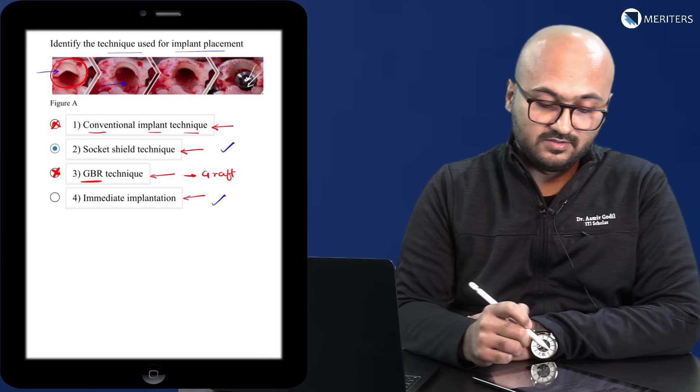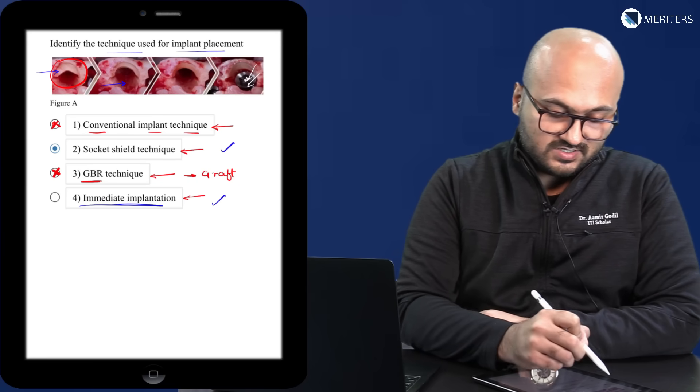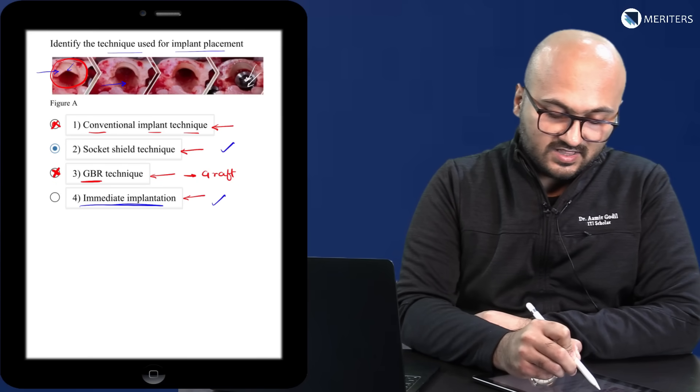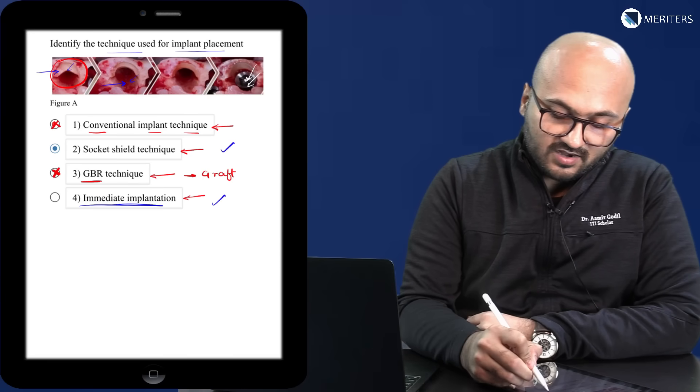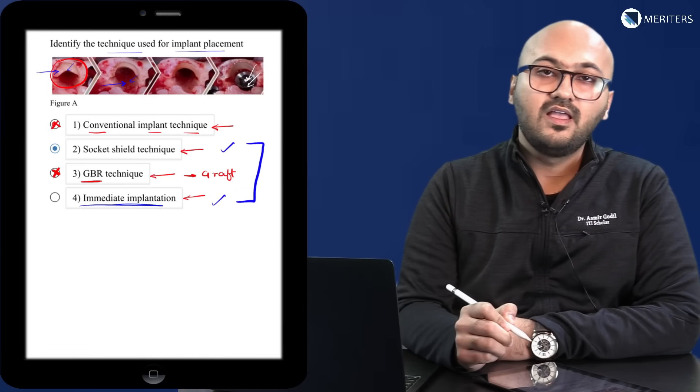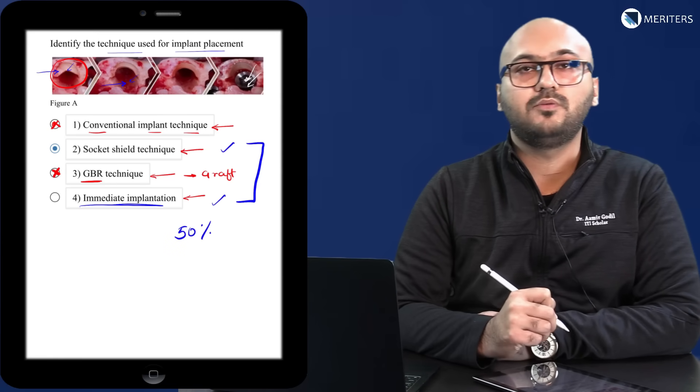That leaves you with two options, number two and number three. Now this is an immediate implant placement because you can see that the piece of root is still there and the tooth was extracted. So the socket is still there. So you would be confused between these two options. And if you choose between these two options the chances of you getting a correct answer is 50%.